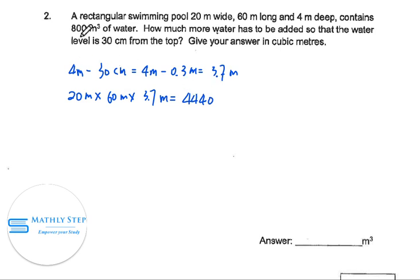Currently it already has 600 cubic meters of water. So, the amount of water that we need to add in is using 4440 minus 800 equal to 3640 cubic meter.